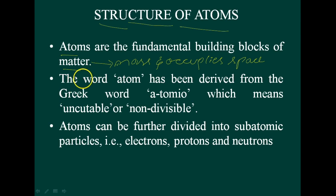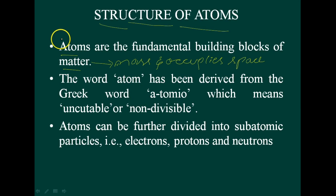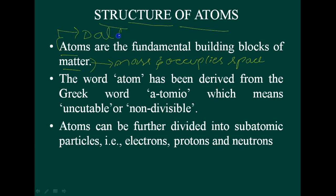The atomic theory of matter was first proposed by the scientist John Dalton, a British school teacher, in 1808. His theory, called Dalton's atomic theory, regarded the atom as the ultimate particle of matter.